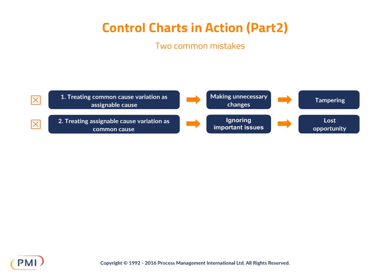Second, treating assignable cause as common cause variation. Ignoring assignable causes means that you miss a valuable chance to learn about and change something that's causing large deviations from your ideal state. Using the two rules A and B minimizes the chance of making these two types of mistakes.